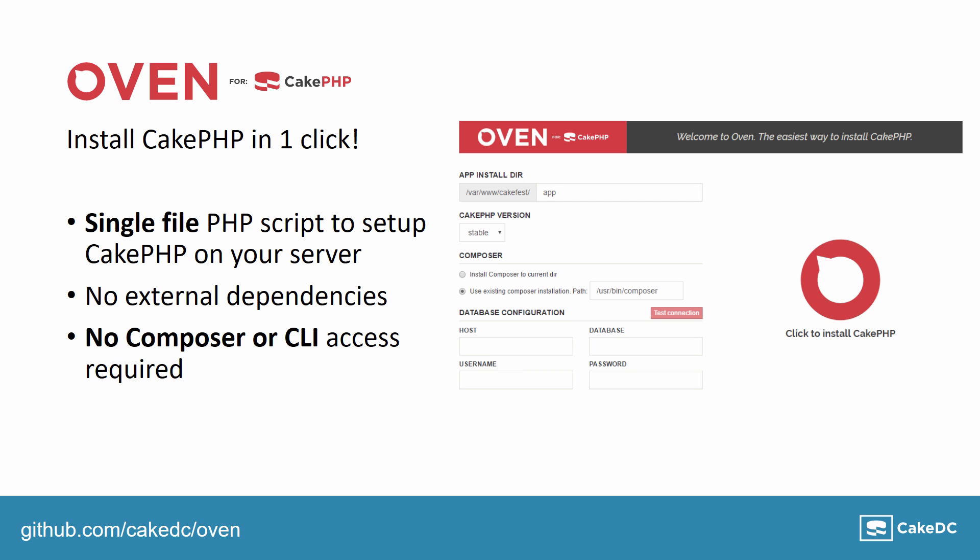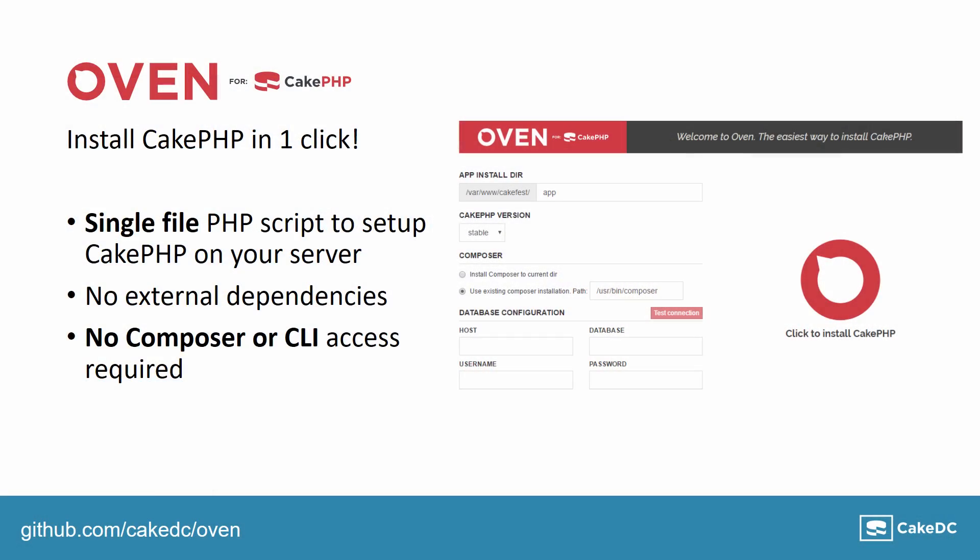So I'd like to introduce Oven. It's a single file PHP script that you can upload to your server and run. It will check if you have everything you need to run CakePHP — PHP version, required extensions. You can specify database connections. It will download Composer if needed and create a CakePHP project for you, so you can install CakePHP pretty much only using your mouse.